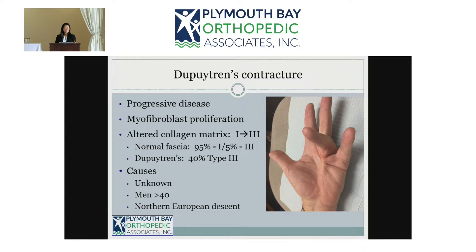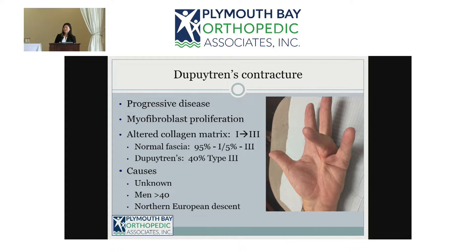Dupuytren's is a progressive but painless disease. Basically there is a specific cell that causes the fascia to start clumping together — it's just a clumping of the fascia right under the skin. The difference between Dupuytren's fascia and regular fascia is the collagen makeup: regular fascia is mostly type 1 collagen, but with Dupuytren's it's more type 3.